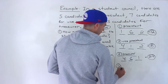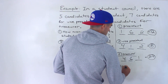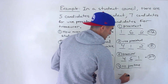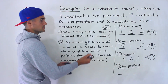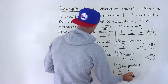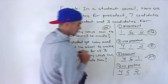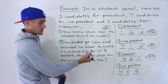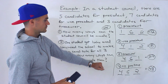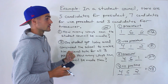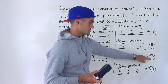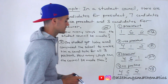The final case — don't forget this — is where the lucky student gets voted into no positions. Then all positions are filled by the other candidates: four for president, six for vice president, and two for treasurer. Four times six is 24, times two gives us 48. So adding up all four cases: 12 plus 8 is 20, plus 24 gives us 44, and 44 plus 48 gives us 92. That's the final answer for number two.